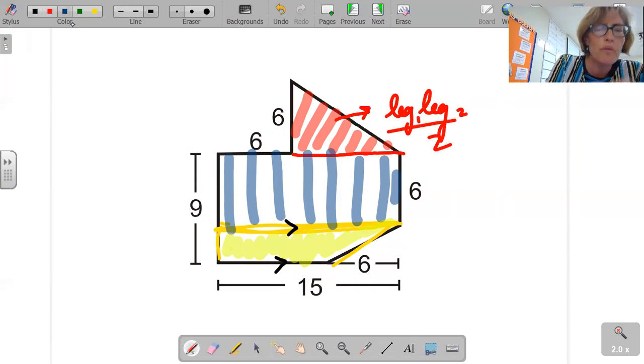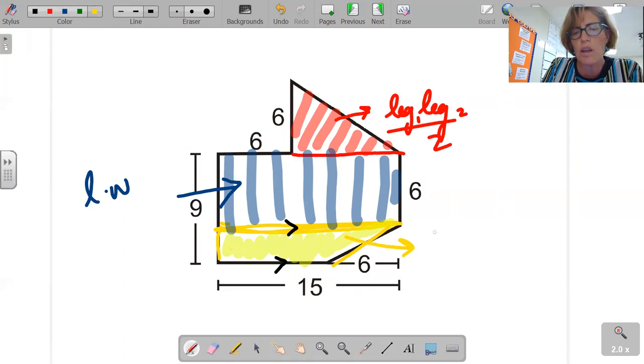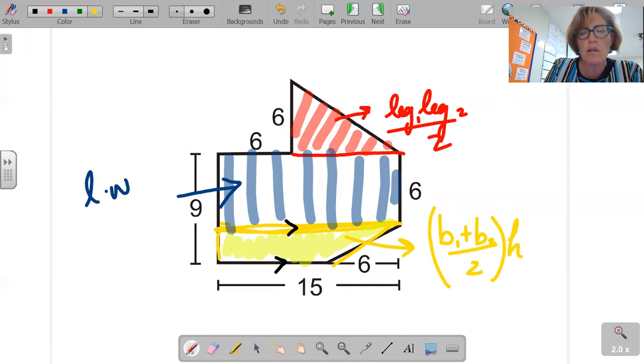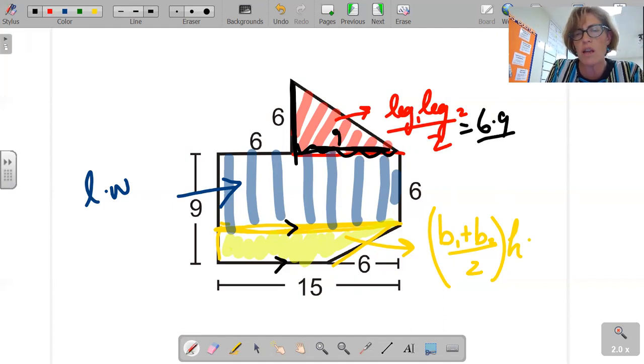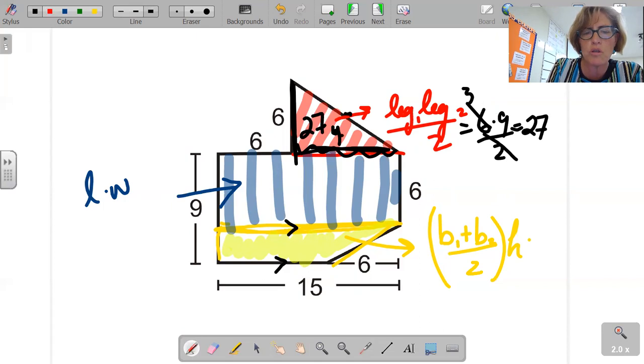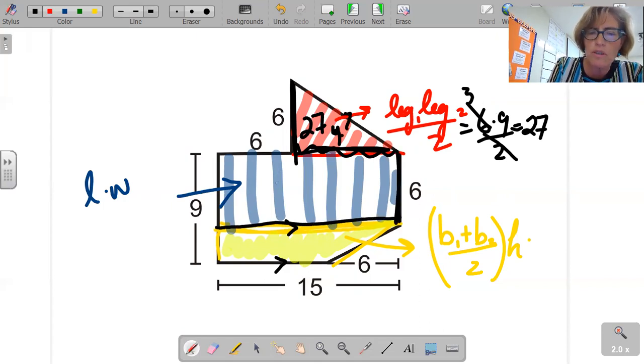So this right here is going to be leg times leg over two. This, of course, is length times width. And this trapezoid is going to be average of the bases over two times height. So we come over here, this is six, this right here is 15 minus six, so it's nine. So six times nine over two. That's 27, so 27 units squared. This is going to be six times 15, 90 units squared.